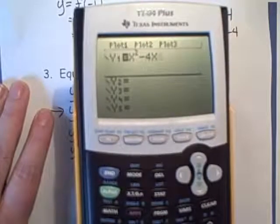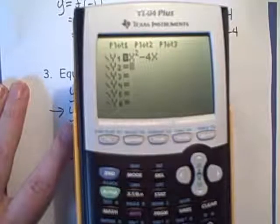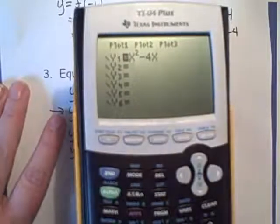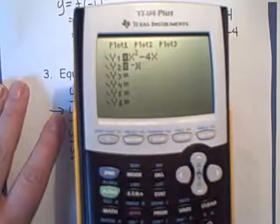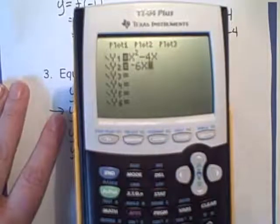And then for my y2, I'm going to put in the equation of my tangent line. That was negative 6x minus 1.